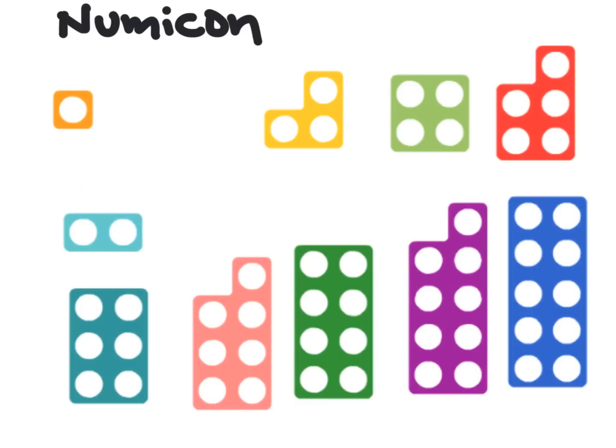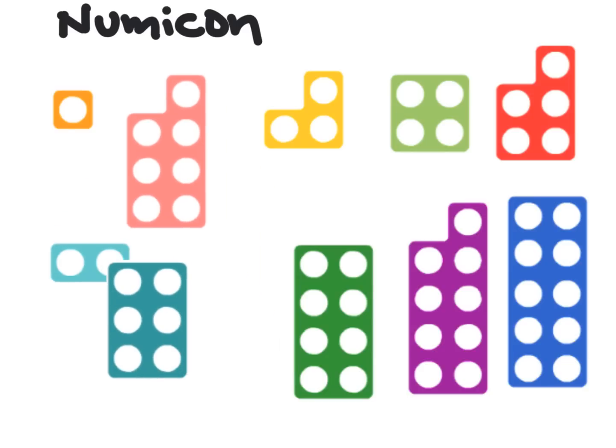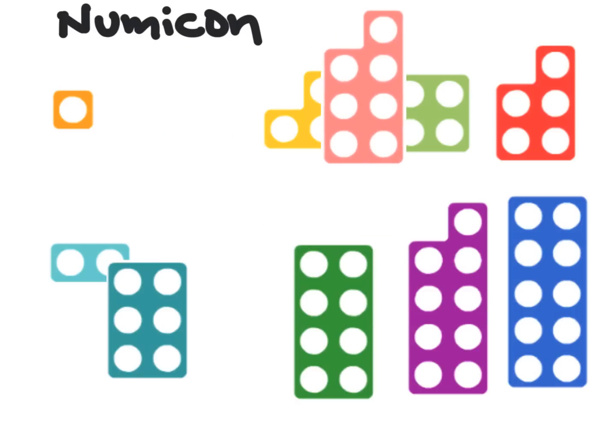Even numbers are numbers where every circle has a partner across the street. So this guy has a partner across the street, so it's even. This circle has a partner across the street, this circle has a partner, this circle has a partner. But this circle does not have a partner across the street, so he is odd.